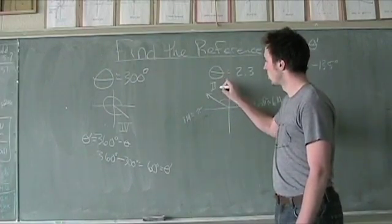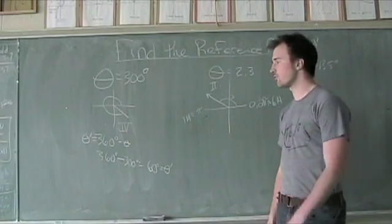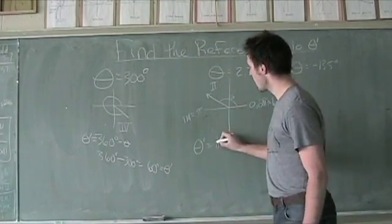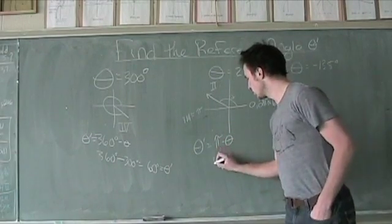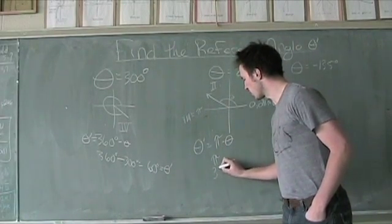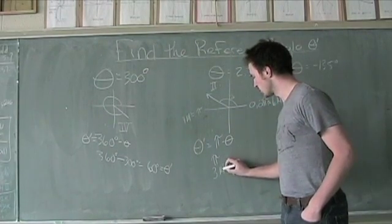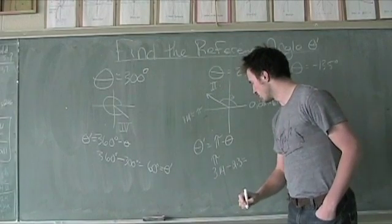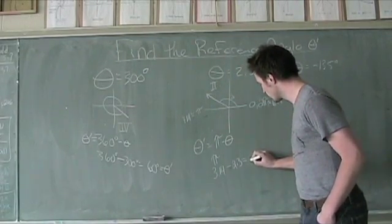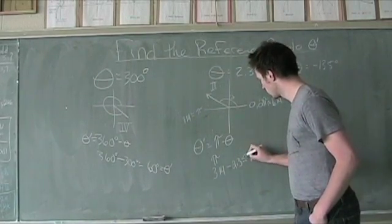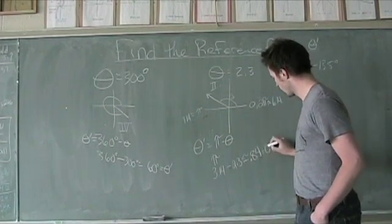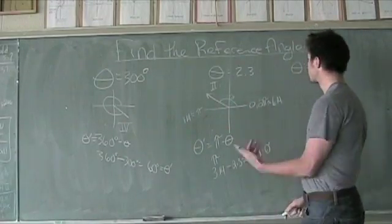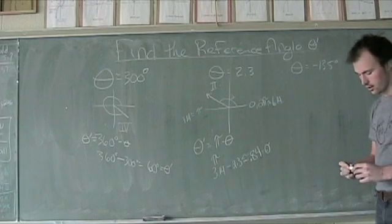Right now, we're in quadrant number 2. And the formula for quadrant 2 is theta prime, using our radian piece of this, is going to be pi minus theta. So here we go: pi, which we'll just take an approximate at 3.14 for this example, minus our theta value of 2.3, leaves us with a value of roughly 0.84. It's just as easy as that, recognizing which quadrant we're in.